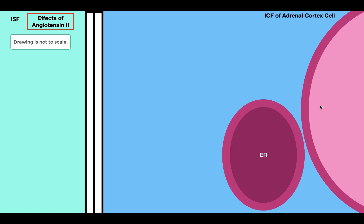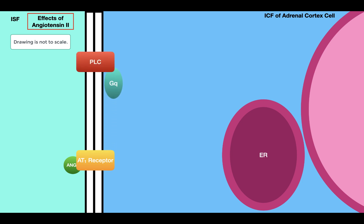In order for angiotensin 2 to affect aldosterone secretion, it needs a receptor — the AT1 receptor. The AT1 receptor is a G-protein coupled receptor coupled to a GQ protein. When angiotensin 2 binds to the AT1 receptor, the GQ protein is activated, which then activates phospholipase C. Phospholipase C catalyzes the conversion of PIP2 into IP3 and diacylglycerol. IP3 then moves into the cytoplasm and interacts with IP3 receptors on the endoplasmic reticulum, causing a conformational change that allows calcium to flow out of the endoplasmic reticulum and into the cytoplasm.